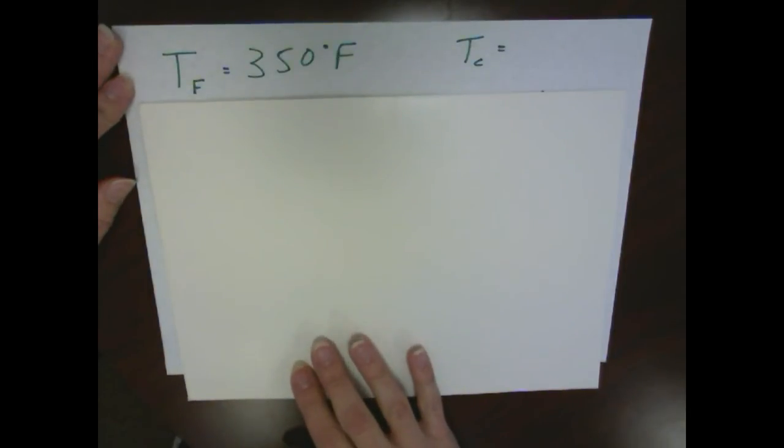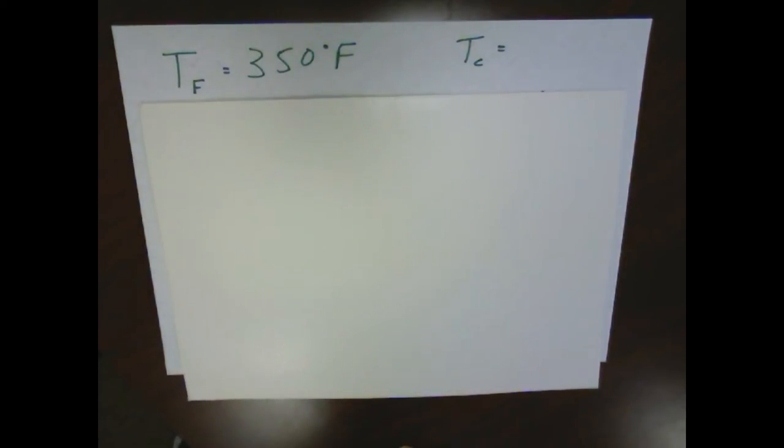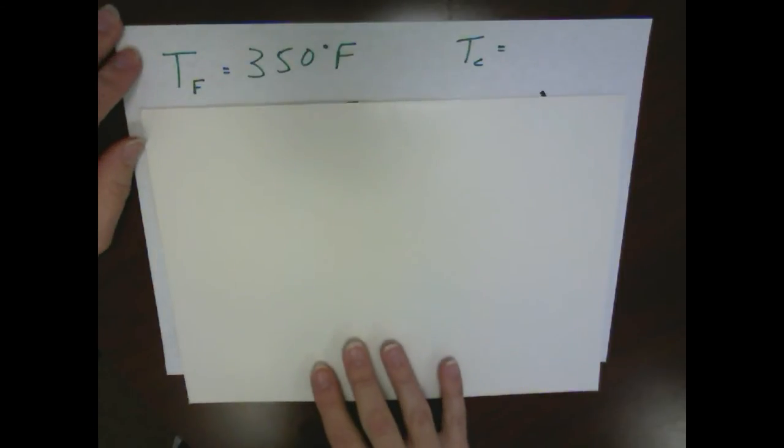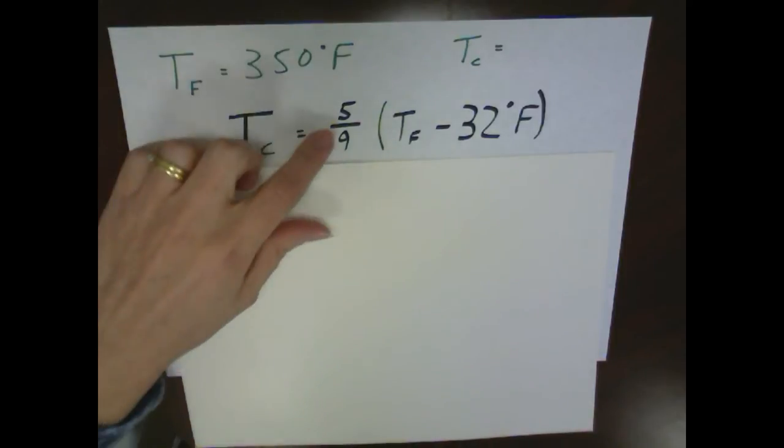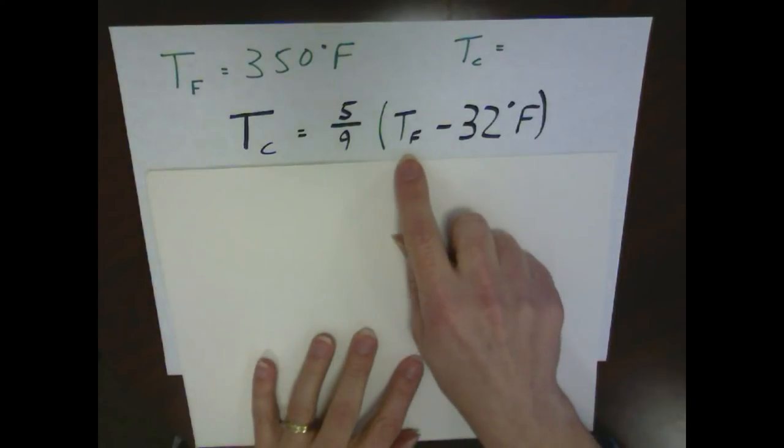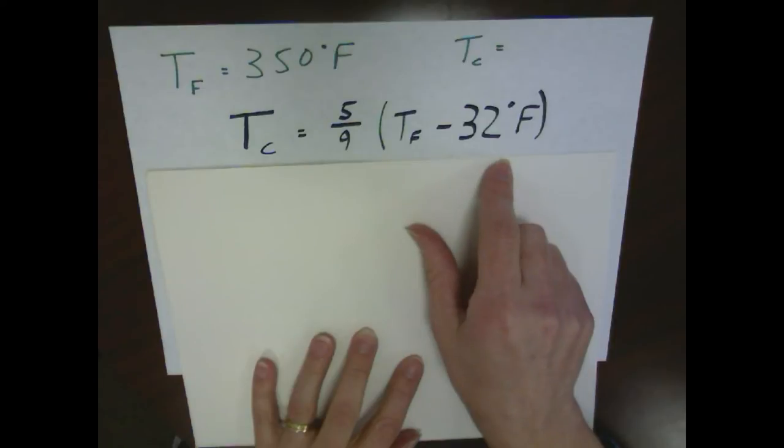I'm going to start with an example of Fahrenheit to Celsius where we have 350 degrees Fahrenheit and we want to convert that into a temperature in Celsius. The equation we use for that is temperature Celsius equals 5 ninths of the quantity the temperature Fahrenheit minus 32 degrees Fahrenheit.